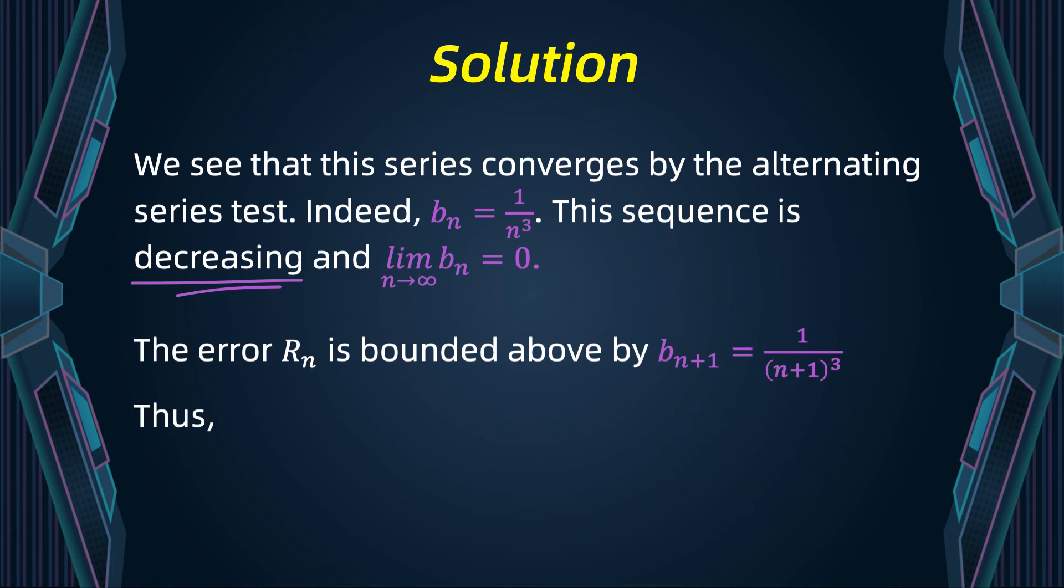So, it is enough to find the value of n such that bn plus one is less than or equal to 0.001. Now, everything reduces to solving an inequality. You can follow the steps and convince yourself that it is enough that n is above nine.